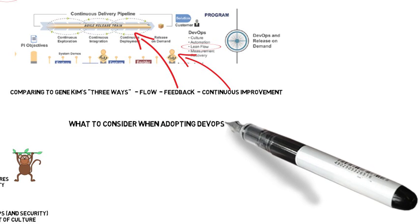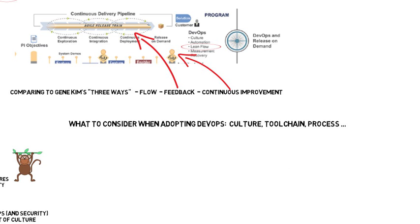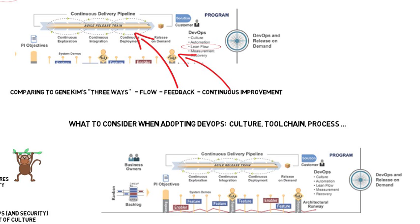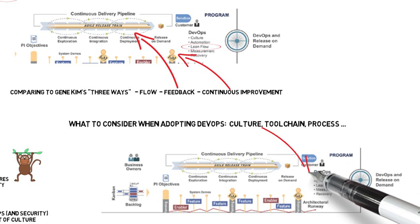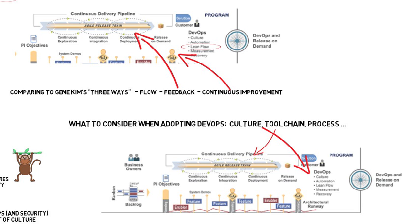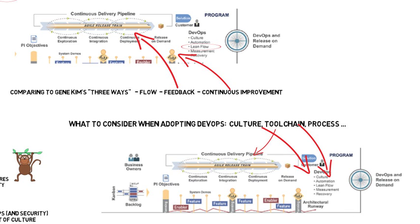When moving to DevOps, we need to consider culture, tool chain, and process — where do those fall into Scaled Agile? Culture is there under the CALMER DevOps principles — how are we working together, collaborating, doing things? The tool chain is built right into the continuous delivery pipeline through continuous integration, continuous deployment, and automation in the CALMER definition — automation tools are right there. And for process, we use Kanban — not only at the program level, but Kanban is used consistently throughout the entire Scaled Agile framework at every level.